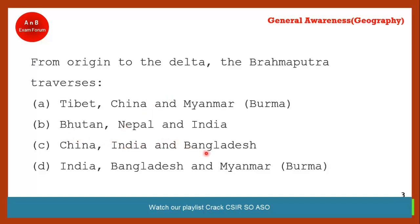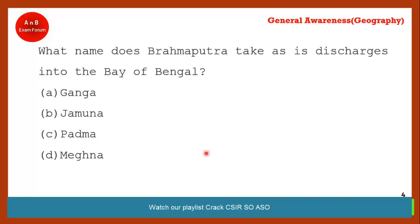Coming to the next question: what name does the Brahmaputra take as it discharges into the Bay of Bengal? The correct answer is option D — Meghna. When Brahmaputra enters Bangladesh it is known as Jamuna. When Padma and Jamuna merge in Bangladesh, the river is known as Meghna. So Meghna is the correct answer.